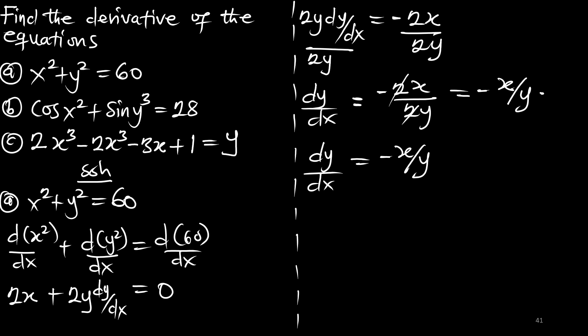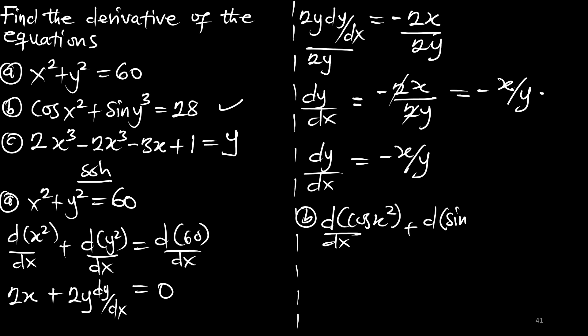Now let's look at the second part, which says: cos(x squared) plus sin(y cubed) equals 28. This is again a function involving x and y, and we are going to apply d/dx to cos(x squared) plus sin(y cubed), equal to d/dx of 28.